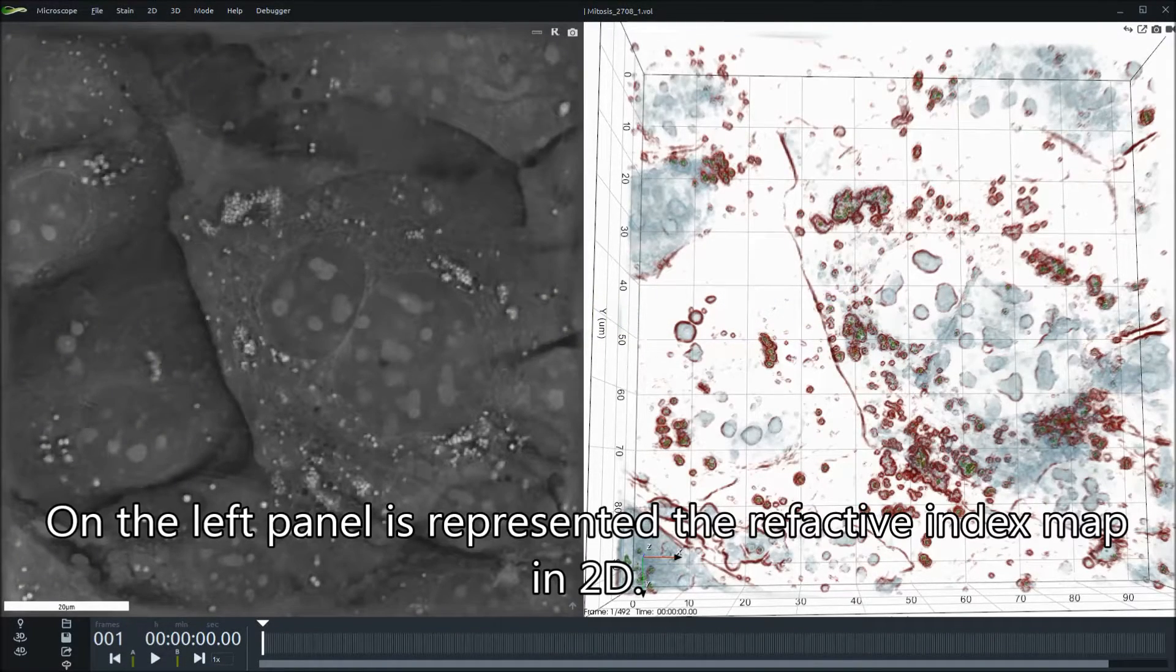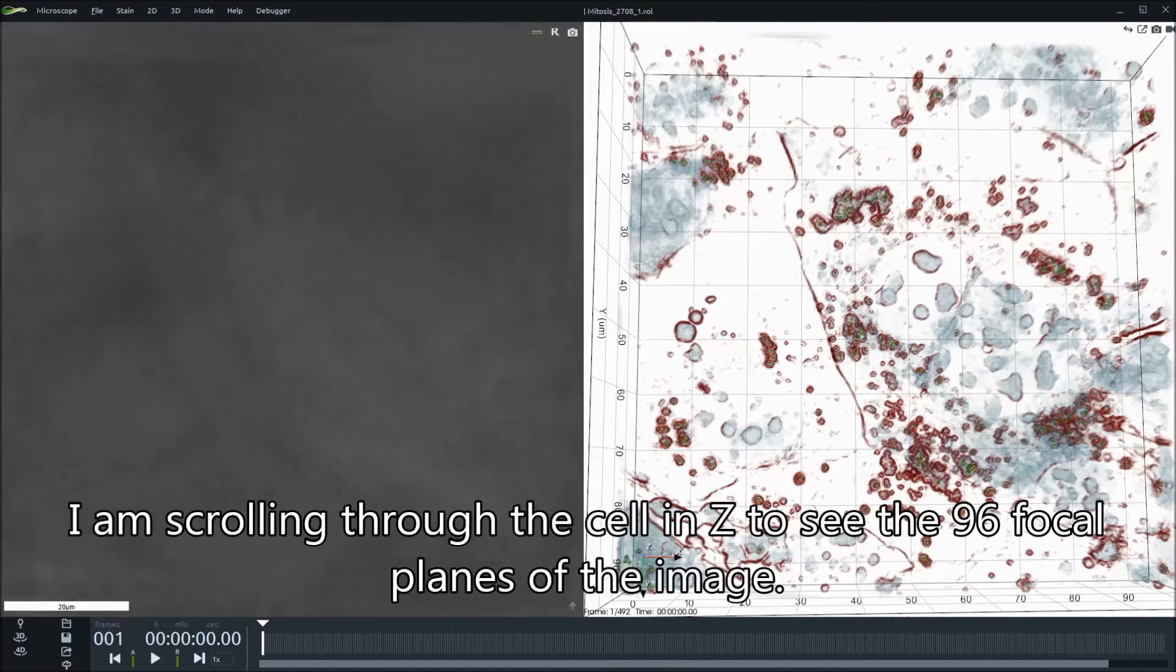On the left panel is represented the refractive index map in 2D. I am scrolling through the cell in Z to see the 96 focal planes of the image.